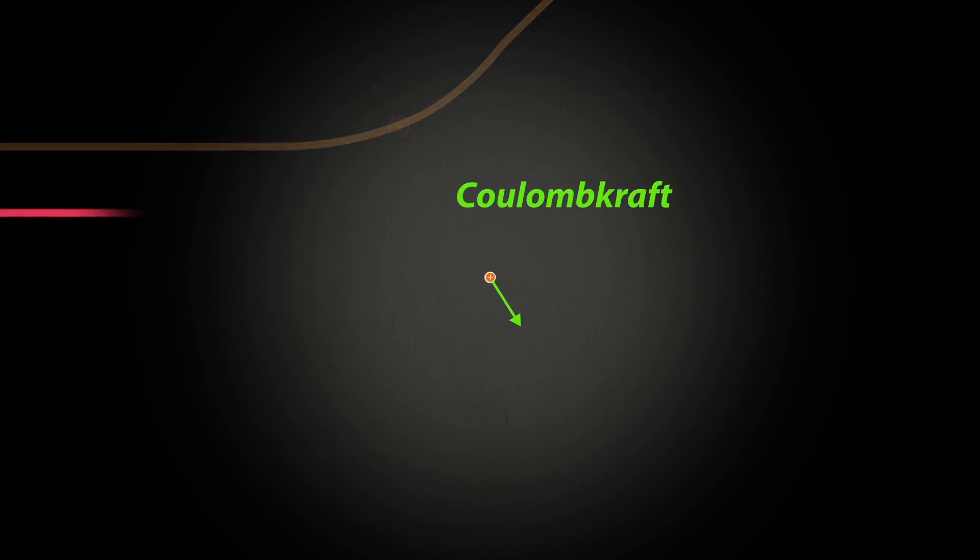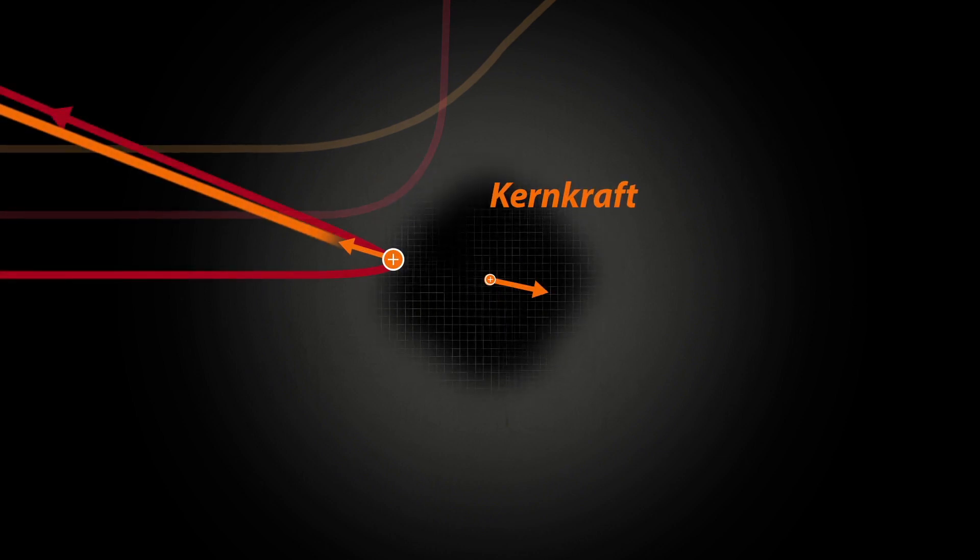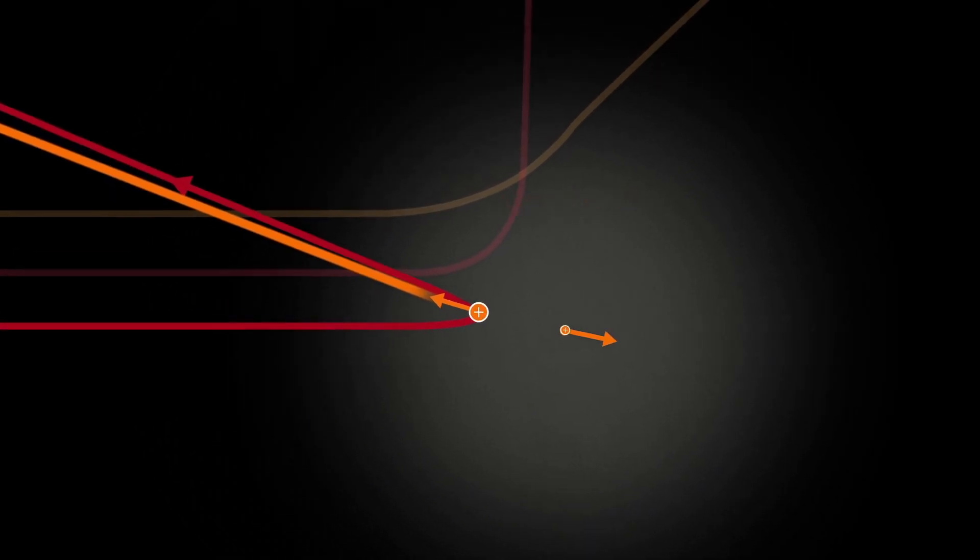The closer an alpha particle comes to the nucleus, the larger the scattering angle. The particle deflects from its hyperbolic path only when a new force, that is, the nuclear force, comes into play.